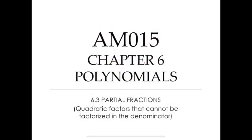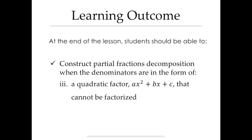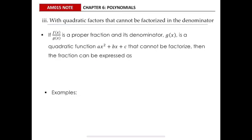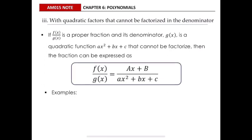In this video we are going to learn about partial fractions which involve quadratic factors that cannot be factorized in the denominator. This is the learning outcome: if f(x) over g(x) is a proper fraction and its denominator is a quadratic function that cannot be factorized, then the fraction can be expressed as a sum of partial fractions.